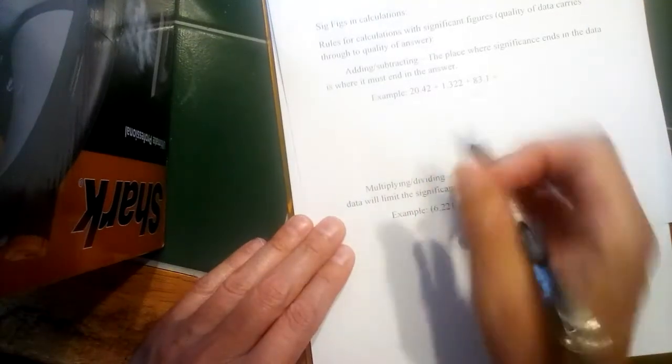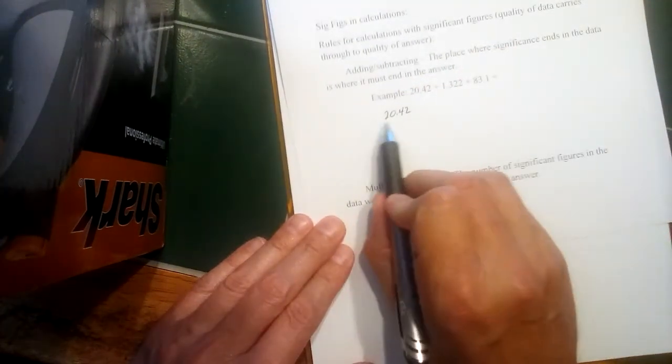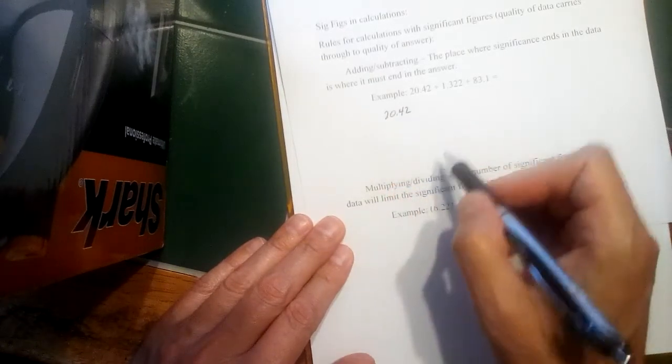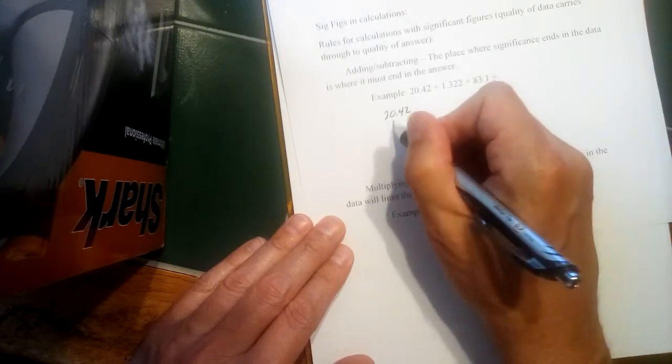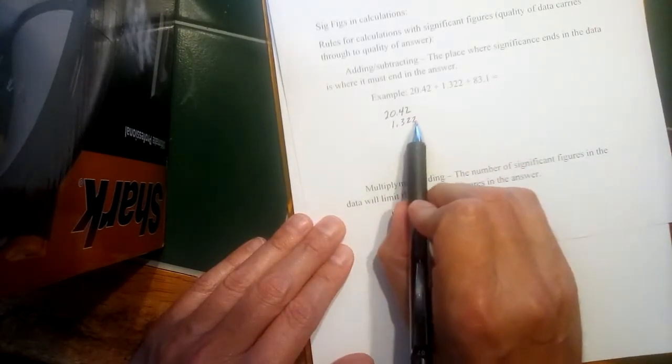And I have a little example here, we can evaluate. So if I look at my set of data here, 20.42, the significance here ends two places past the decimal or the hundredths place. My second piece of data is 1.322, significance ends here three places past the decimal.